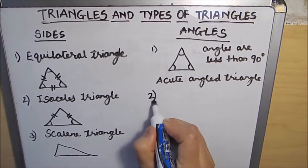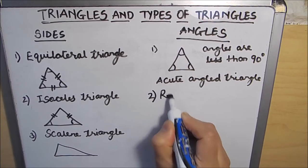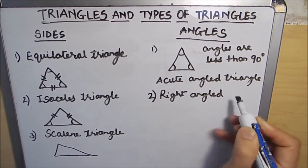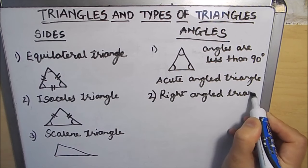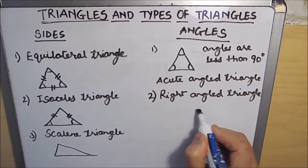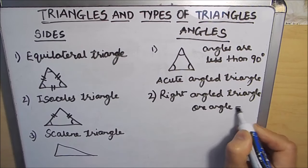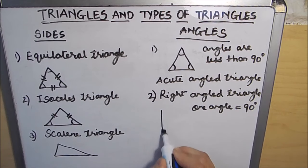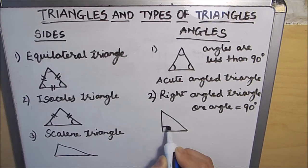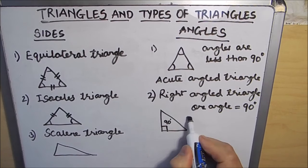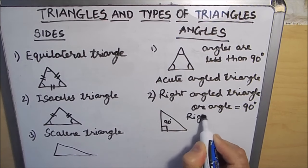The second type is the right angled triangle. If one angle of a triangle is equal to 90 degrees, then it is called a right angled triangle. Here we see that one of the angles is 90 degrees. A right angled triangle is also called a right triangle.